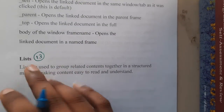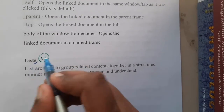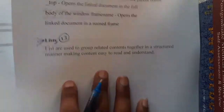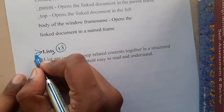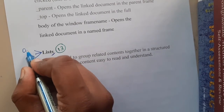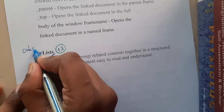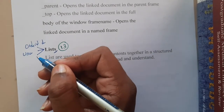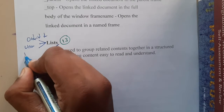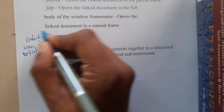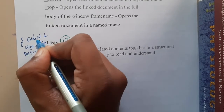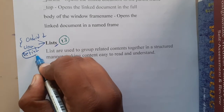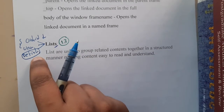So basically, once you hear the word 'list', you need to remember three things. There are three types of lists. The first type is ordered list, the second type is unordered list, and the third type is definition list. In HTML, ordered list and unordered list are the most popular. Definition list is found rarely, but these lists are used in most websites.